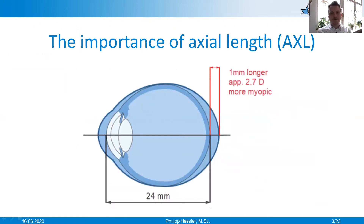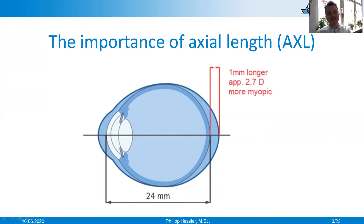The importance of axial length: we all know that an extension of the eye of one millimeter causes a myopia increase of just under three diopters. And now the rhetorical question arises: what is worse — the 2.7 diopters or a one millimeter longer eye? For the child and the parents, this is often the value 2.7. But for us as specialists, the one millimeter should be of much greater importance, because the posterior eye segment is stressed by shear and tensile forces, which can lead to pathological side effects.